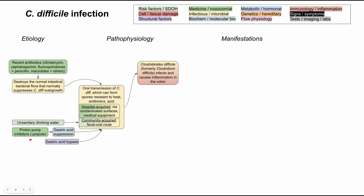For instance, proton pump inhibitors like omeprazole and other drugs ending in -prazole suppress your gastric acid, which can make it more likely for C. diff spores to survive. Enteral feeding, which is feeding into the stomach through a tube, can also bypass most of your gastric acid if it deposits food directly into your small intestine, allowing spores to bypass your gastric acid and make it into your gut.